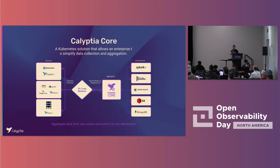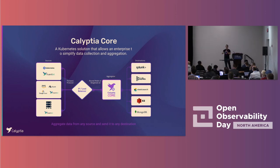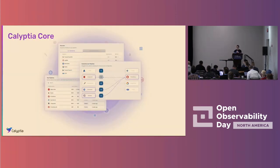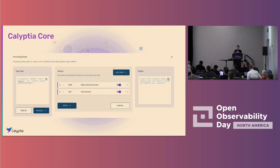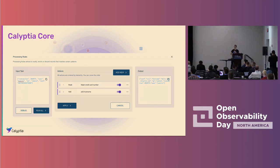A natural step for open source is to build enterprise layers that companies can rely on. Today we are announcing the launch of Calyptia Core. Calyptia Core is one product that allows you to unify and simplify all observability aspects of your Kubernetes cluster. It's not a drop-in replacement for your agents or your backend solution — it simplifies the problem of how to collect and aggregate data using open source tools you've already bet on.